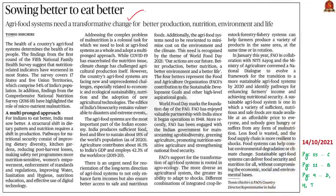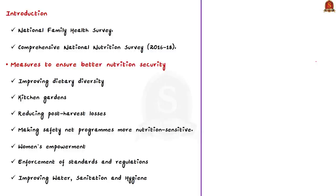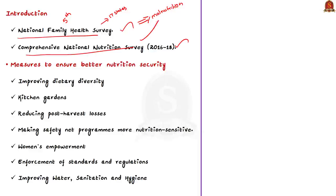Let us start today's discussion with an op-ed article taken from the 14th October newspaper. This article gains relevance in relation to the recently published Global Hunger Index. The author proposes a solution to the rampant malnutrition prevalent in the country. This article is well-structured — this is how we must write our mains answers. The author gives two nutrition-related data points: he quotes the fifth National Family Health Survey covering 17 states, which indicated that nutrition-related indicators have worsened. He also quotes the Comprehensive National Nutrition Survey 2016-18, highlighting micronutrient malnutrition among Indians.